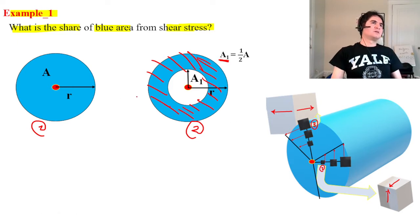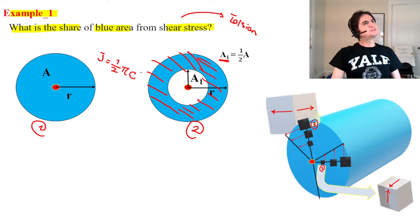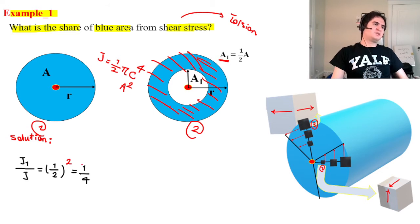As you remember, that's definitely due to torsion. Polar moment of inertia is half of pi times c to the power of 4. So that's A squared. So one can say J1 over overall J is a half of 1 over 2 because area 1 is a half of area, original area, squared. And that's a 1 quarter.